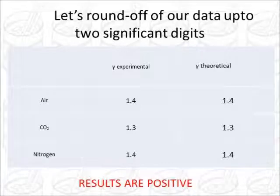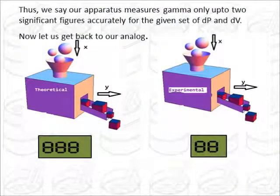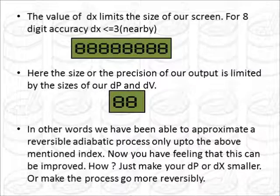Now what we have done here is what we have done earlier in the analog, is the same what we have done here. See, thus we can say our apparatus measures gamma only up to two significant figures accurately for the given set of dp and dv. Now let's go back to our analog. The theoretical machinery gives us an output up to three significant digits, but the experimental machinery is limited just to two significant digits so that it is well in comparison to our theoretical machinery.